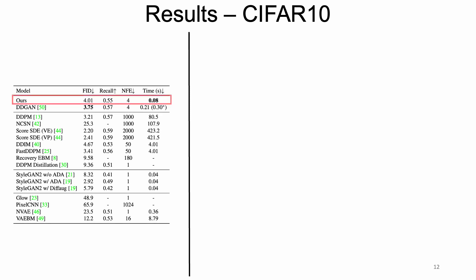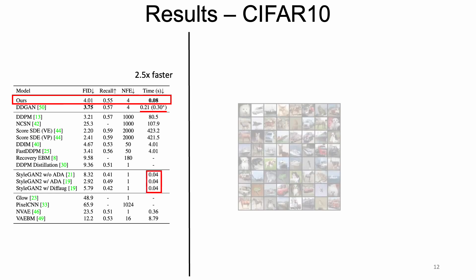Next, results on CIFAR-10 are first presented. Our sampling time requires only 0.08 seconds, which is 2.5 times faster than DDGAN, while achieving comparable FID scores with other diffusion models. This gives us real-time performance with StyleGAN counterparts. Generated samples are shown on the right.